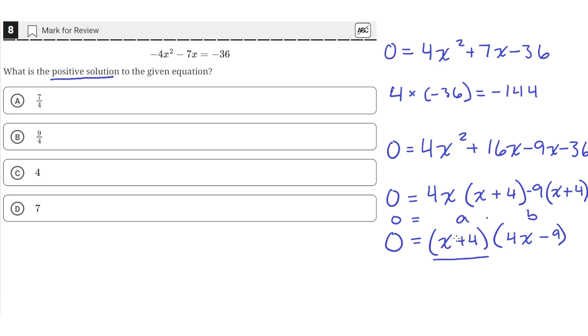So when a is equal to 0, the value of x is equal to negative 4. Because negative 4 plus 4 is 0, which will turn this whole equation into a 0, which satisfies the equation. So one of our solutions is x equals negative 4.